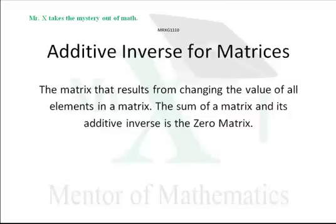It's the matrix that results from changing the value of all the elements in a matrix. When you add inverse matrices to one another, additive inverses, you get the zero matrix.